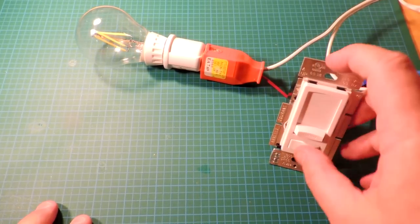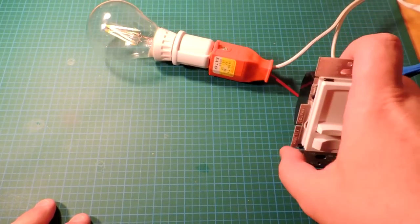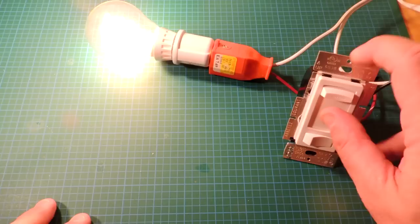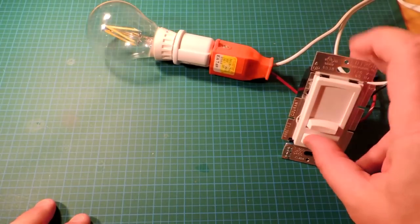Okay, dimmer test. This bulb is not dimmable. You can see it just has a flashing behavior at low intensities and basically only on or off.